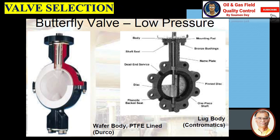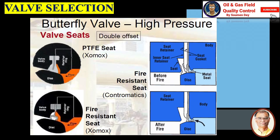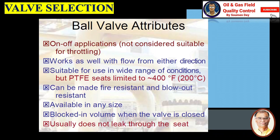Butterfly valve (high pressure): suitable for on and off position and throttling, generally works with flow from either direction, suitable for use in a wide range of conditions. PTFE seats are limited to a maximum of 200°C (400°F). Can be made fire resistant and blowout resistant. Generally available NPS 3 and larger, no blocked-in volume when valve is closed, usually does not leak through the seat. You can see the left PTFE seat and right side the fire resistance seat.